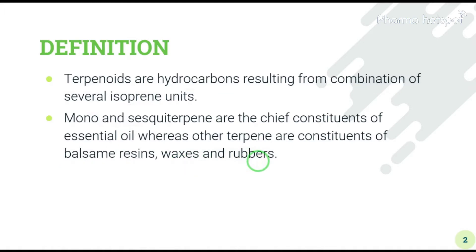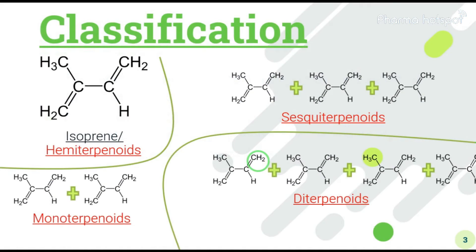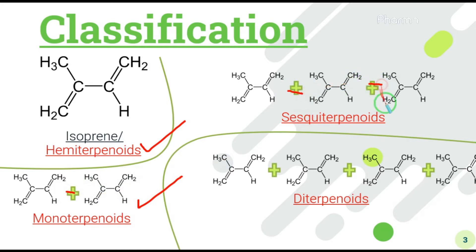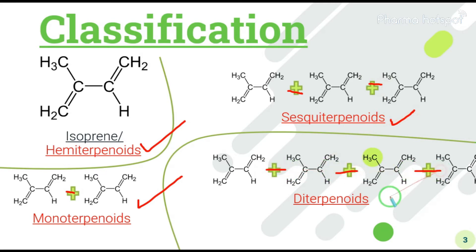Now for classification: if there is a single isoprene unit, we call it hemiterpenoids. If two isoprene units are connected or joined, we call it monoterpenoids. If there are four isoprene units, it is called diterpenoids.